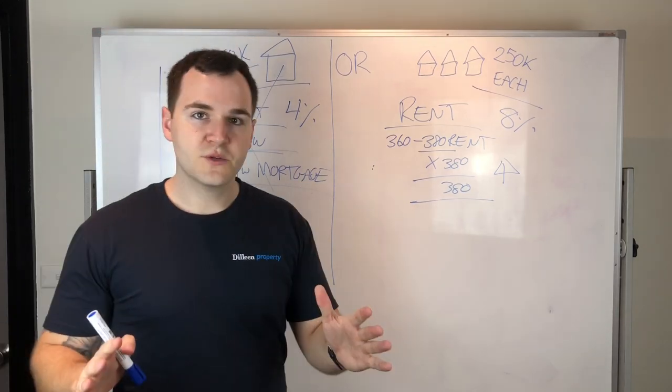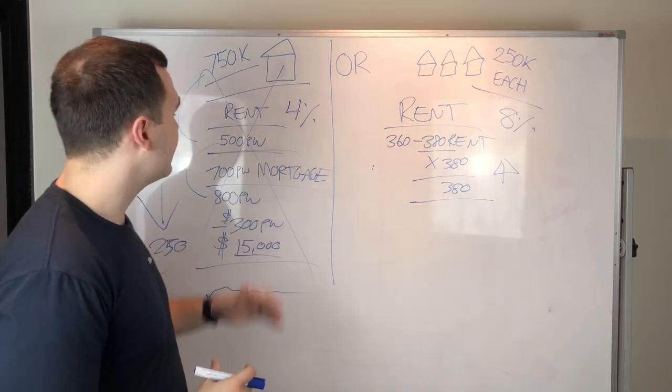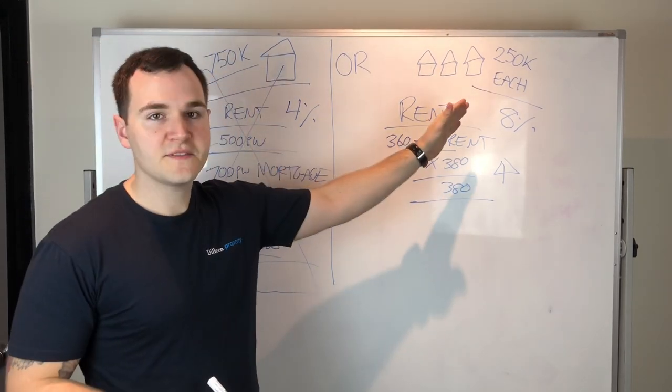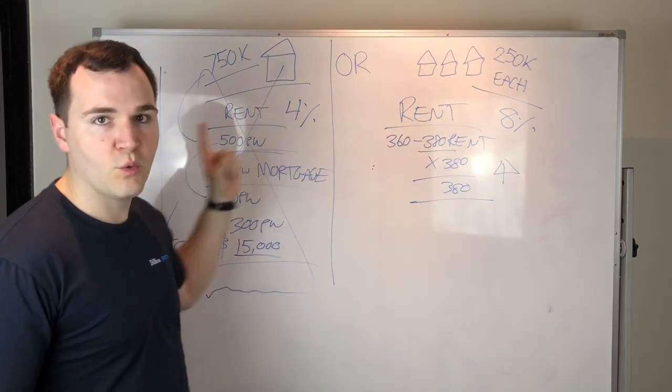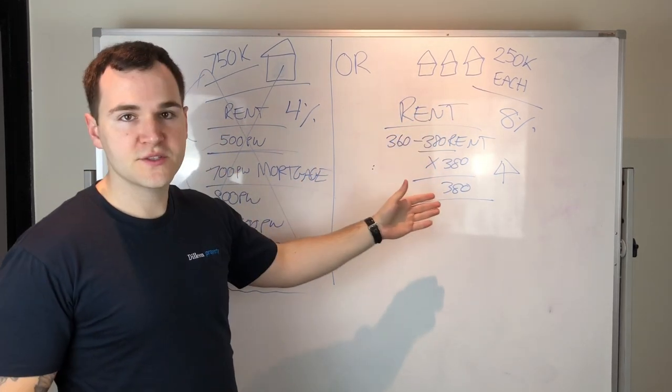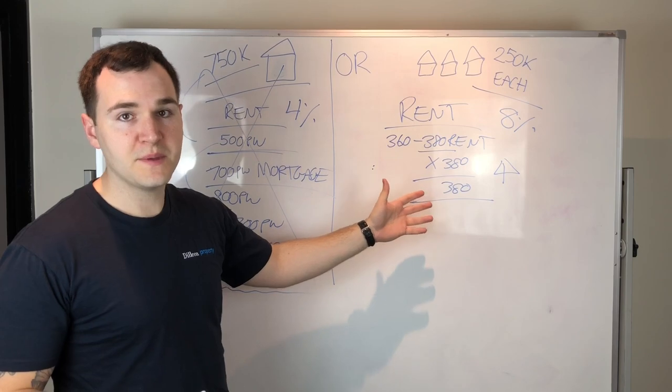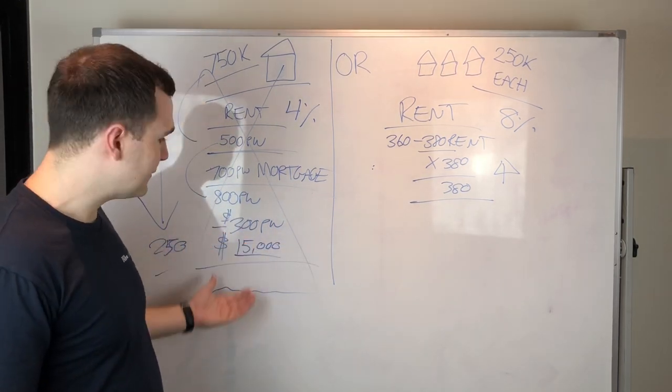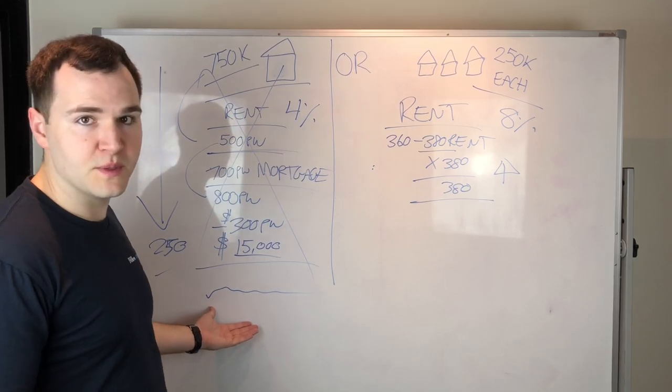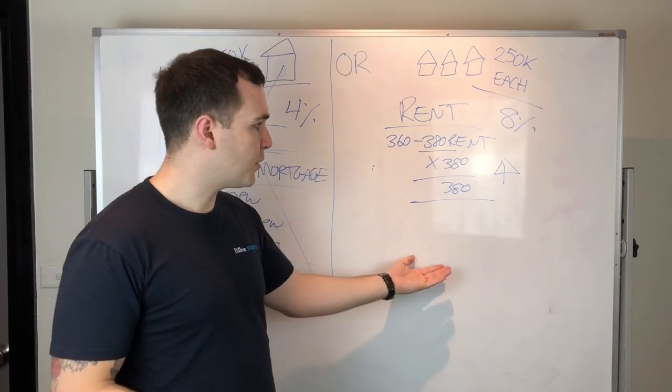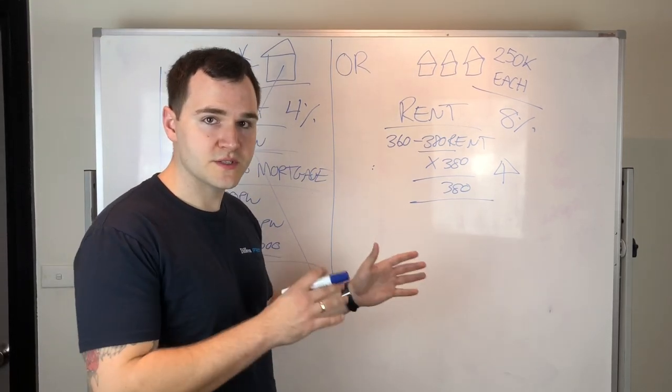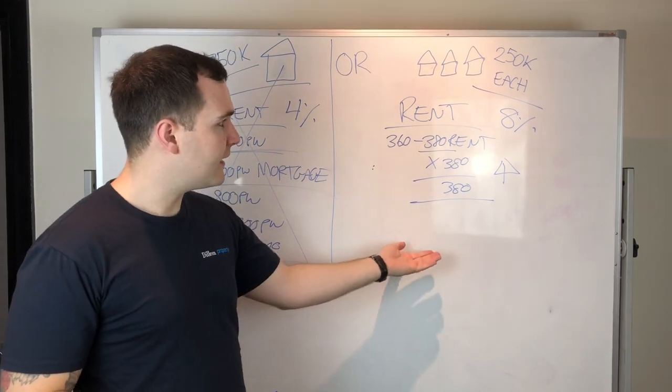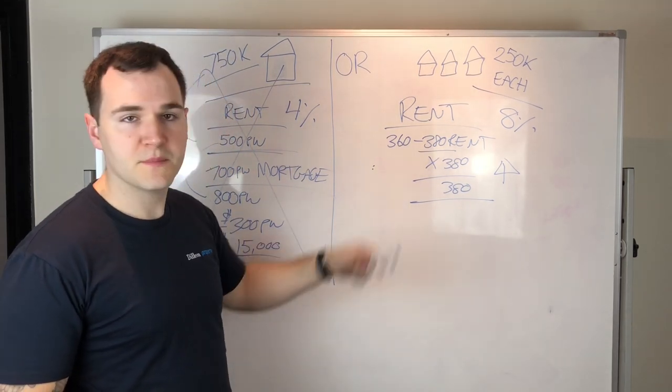So this is a quick video. $750,000 versus three properties for $750,000. Over $1,000 in rent per week, maybe more, or $500 per week losing $15,000 per year could be more. Probably a neutral to slightly positive geared position right here. These things can keep going up.